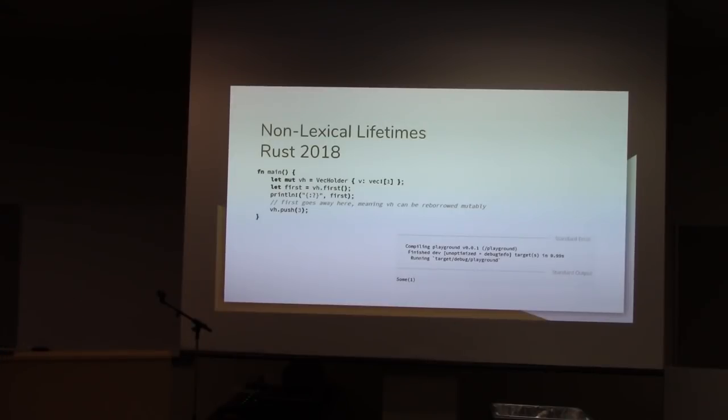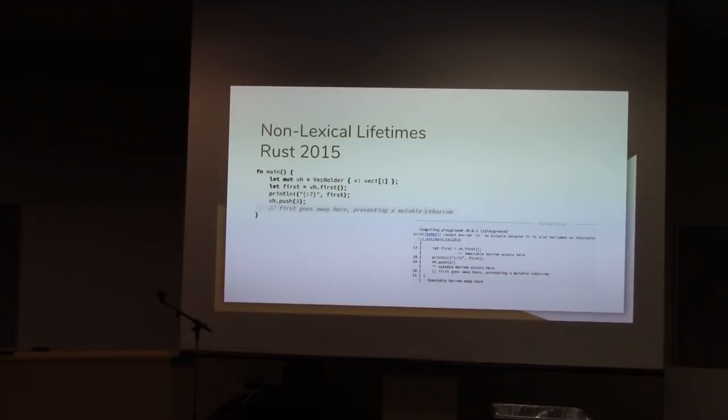In Rust 2018, we can create an instance, we can get the first element, print it out, and then we can push a new element to the list. Great! Rust 2015 doesn't like this, because first is going to be around until the end of the scope, and that has an immutable borrow on the vec. So when you try to get a mutable borrow when we do the push, sorry, you can't have immutable and mutable borrow at the same time, so it fails.